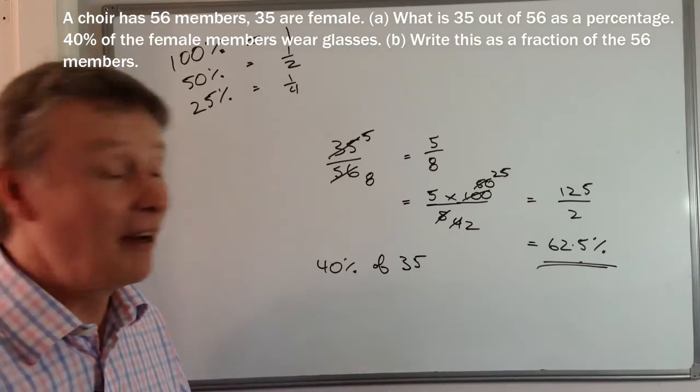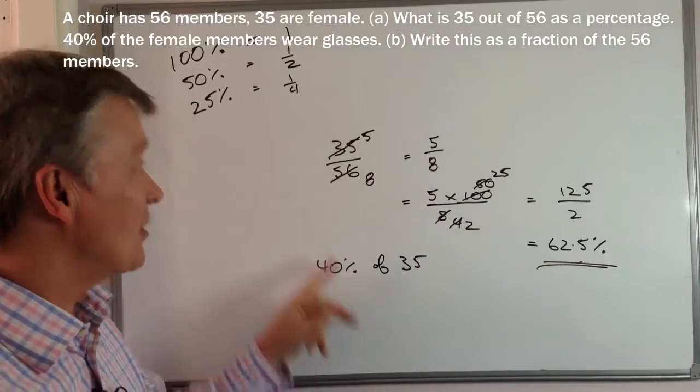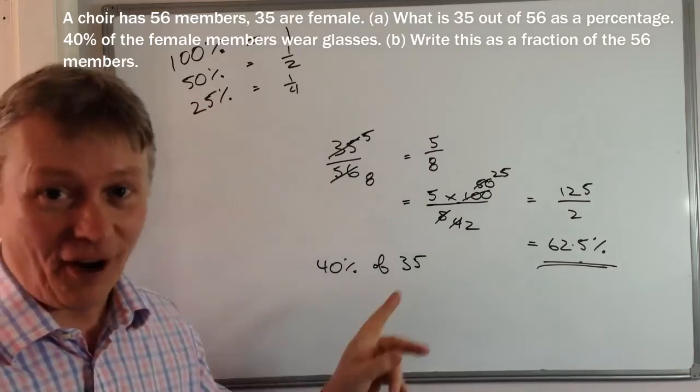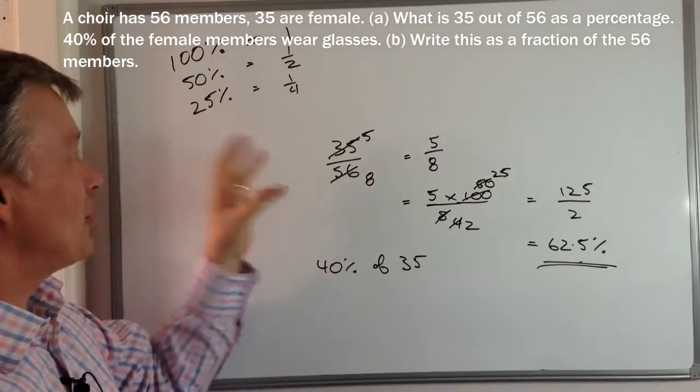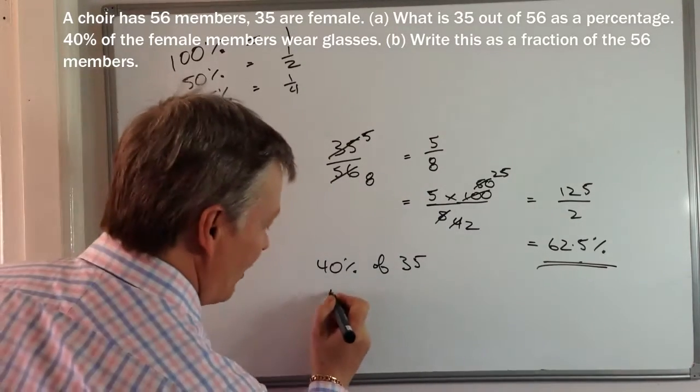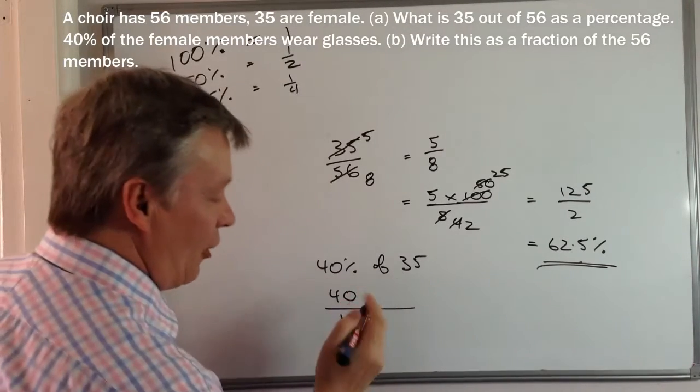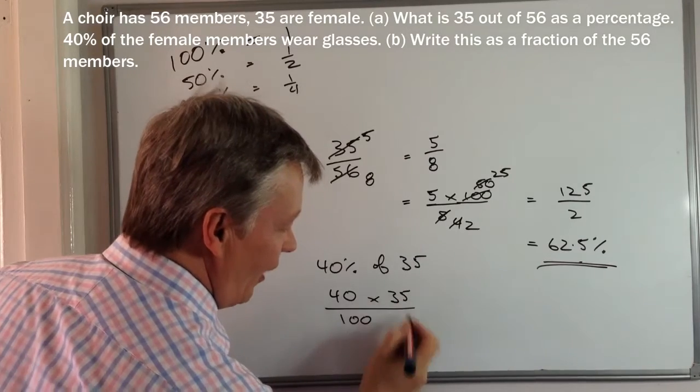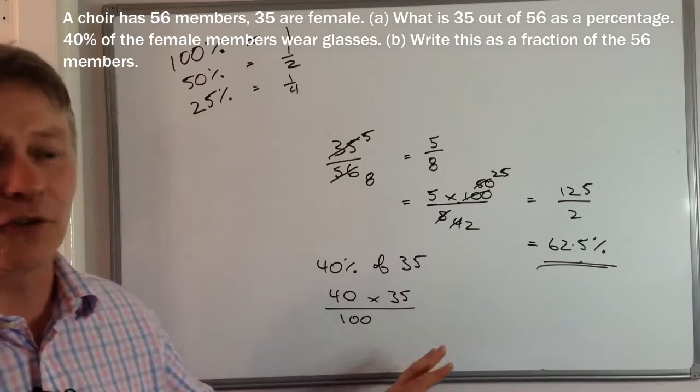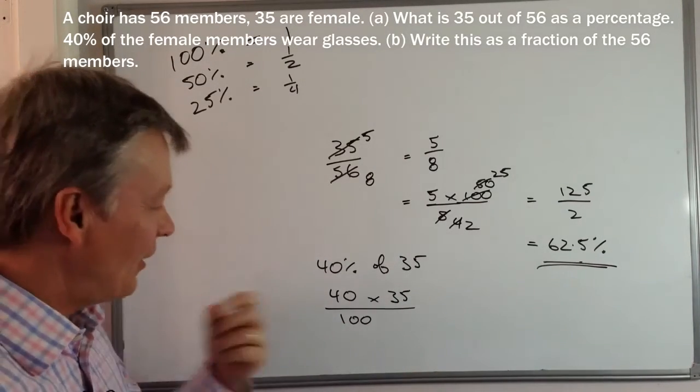Okay. Well, you know what's coming now, I'm going to make this into a fraction. So 40% is the same as saying 40 out of 100. And of means multiply 35. Okay. So that's the calculation that we need to go through.